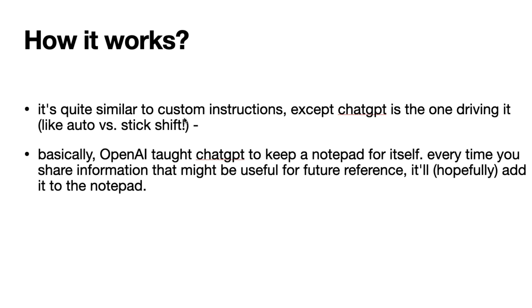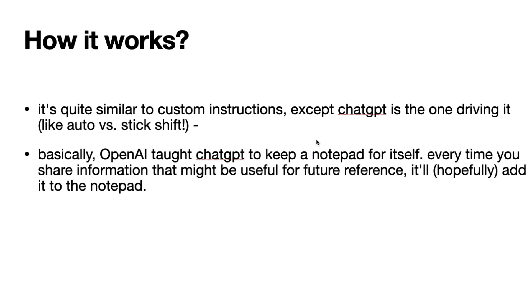How does it work? It's very similar to custom instructions. In custom instructions, you give an instruction that is valid for the current session, but this one goes beyond the current session — it's almost like the system prompt. ChatGPT keeps note of all these individual memory elements and adds them so that the chat session has more information about you. It is like custom instructions except ChatGPT is the one driving it — almost like automatic versus stick shift. OpenAI has taught ChatGPT to keep a notepad and every time you share information that ChatGPT believes would be useful for future reference, it adds it to the notebook.